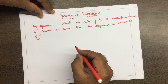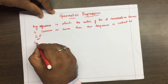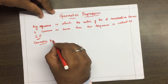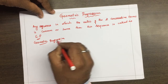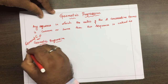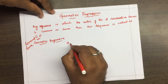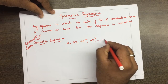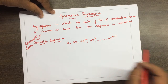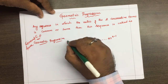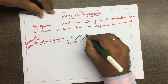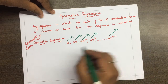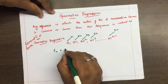Here the general form of the geometric progression is: a, ar, ar², ar³, and so on up to ar^(n-1). Here 'a' denotes term one, ar is term two, ar² is term three, ar³ is term four, and ar^(n-1) is the nth term. So the general form of the nth term is ar^(n-1).